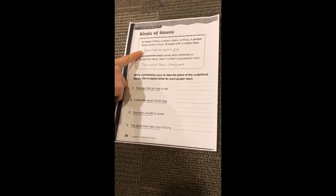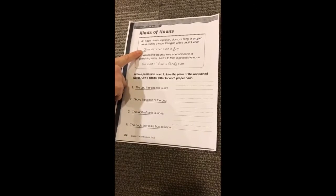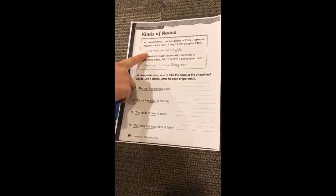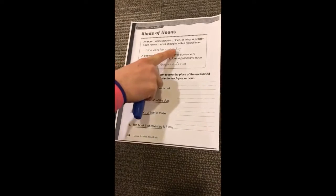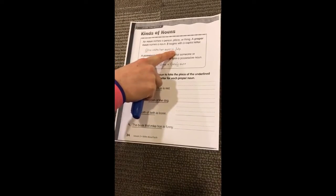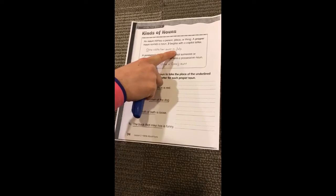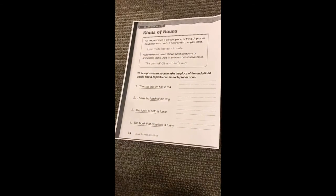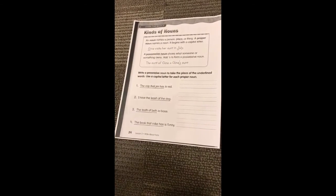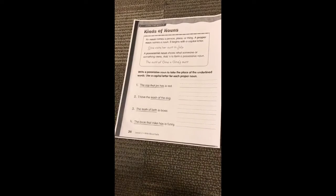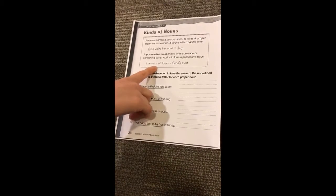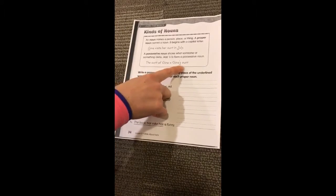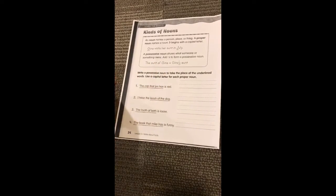In this first sentence we have: Gina visits her aunt in July. So Gina starts with a capital letter because that's a name of a person. And July also starts with a capital letter because that's a name of a month. Now a possessive noun shows what someone or something owns. So when we're talking about the aunt of Gina, we could also say Gina's aunt, and both of those things would mean the same thing.